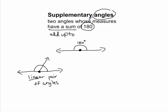Another case: the definition says two angles whose measures have a sum — it doesn't say they have to be adjacent to each other, meaning they share the same vertex and a common ray. You can have two angles that are supplementary but are not in that adjacent setup. It could be a setup like this — here's the other case I'm thinking about.